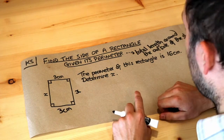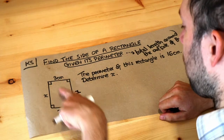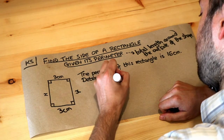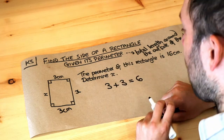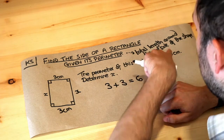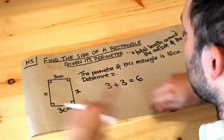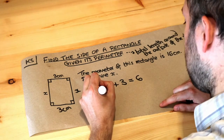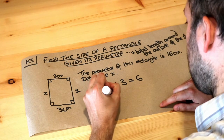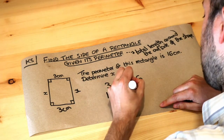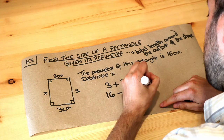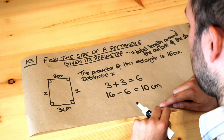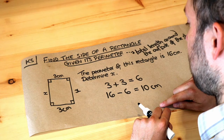So let's add up what we have so far — we know that 3 plus 3 is 6, and then if we take that away from the perimeter of 16, that will tell us what we have left. So if we do 16 minus 6, that means the remaining lengths — this and this combined — add up to 10 centimetres.